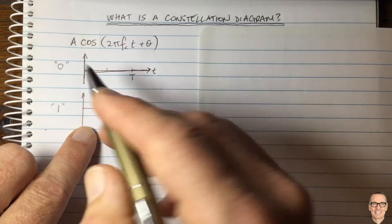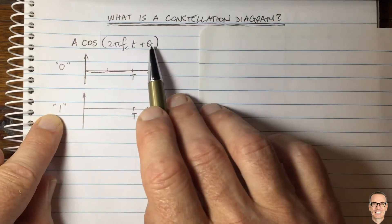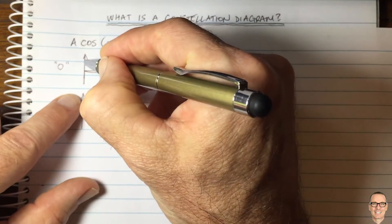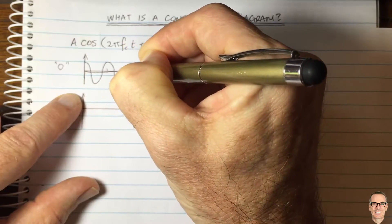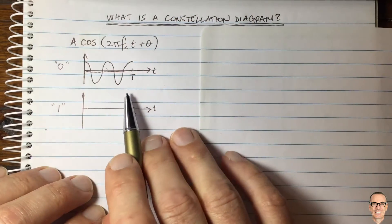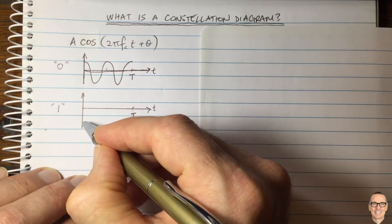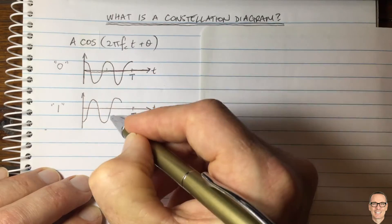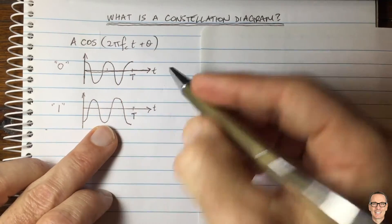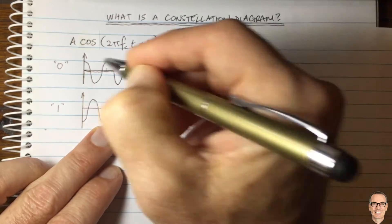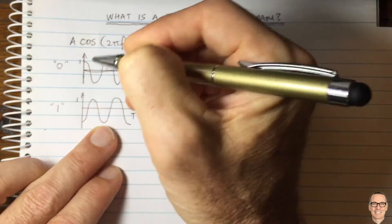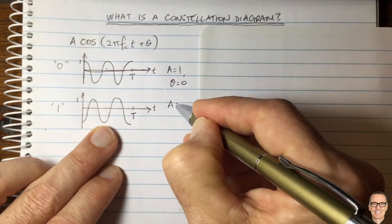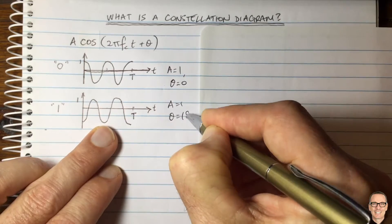One way to differentiate between a zero and a one is to use a different phase. For example, one waveform represents a digital zero, and a waveform with 180 degrees different phase represents a digital one. So this waveform has amplitude equals one and phase equals zero, and the other has amplitude equals one and phase equals 180.